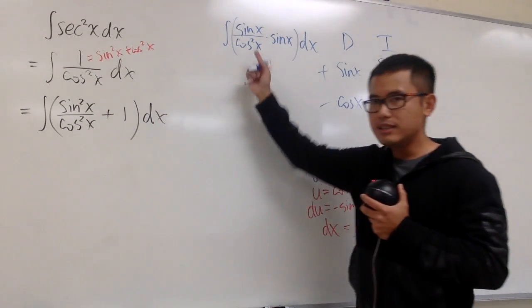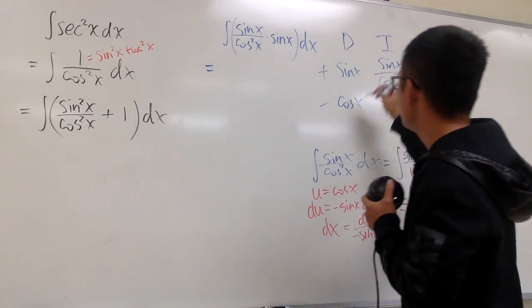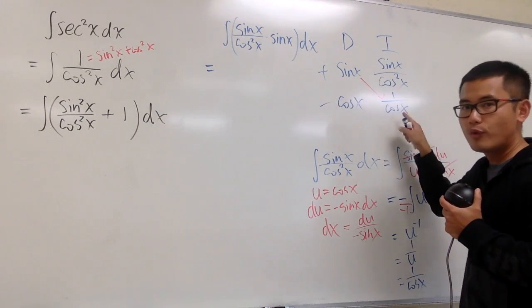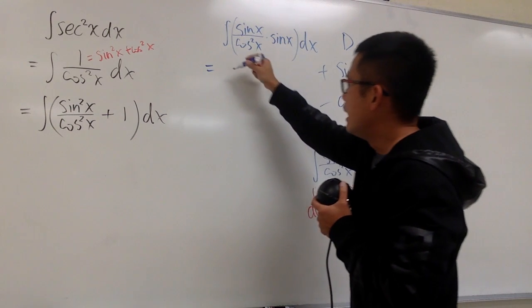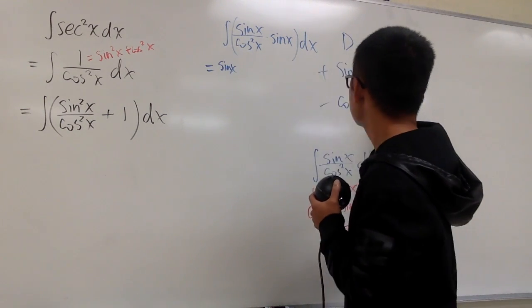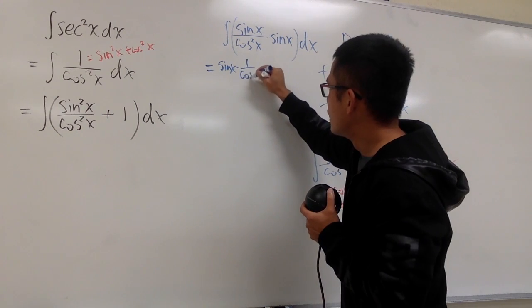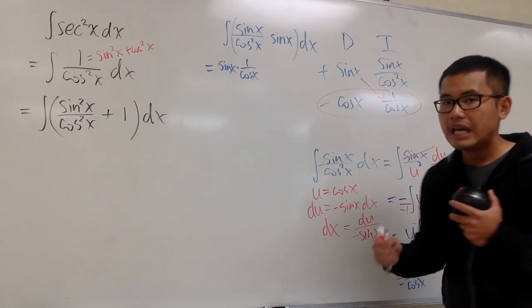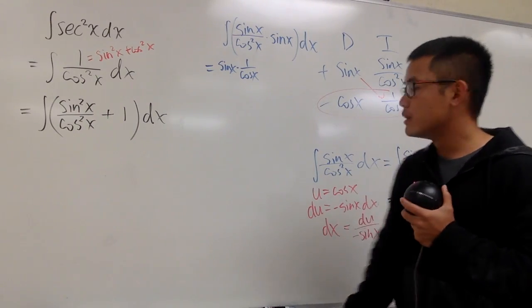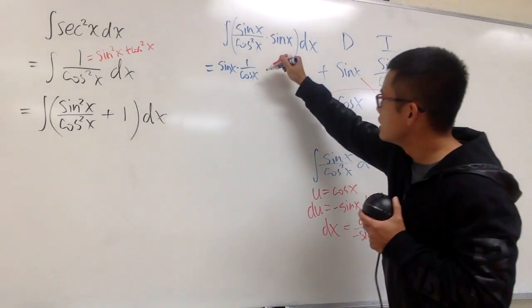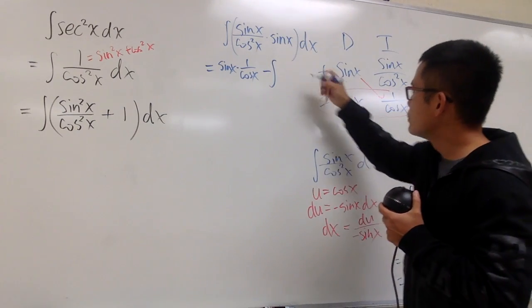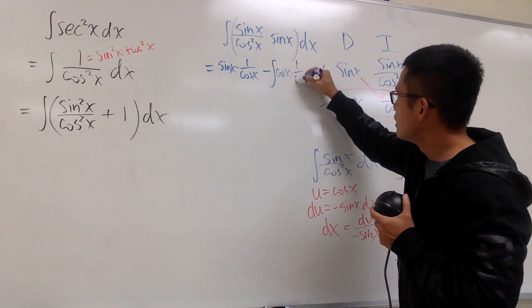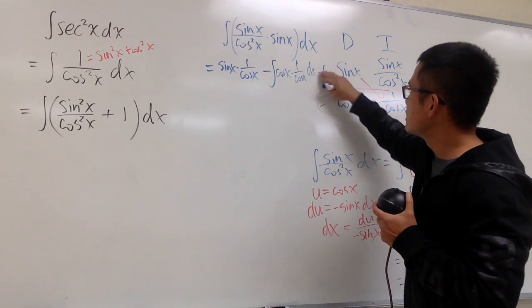From here to here, it's 1 over cosine x. I'm not going to put this down as secant x yet, because this is just my integration by parts part with the DI method. So for this, we know the answer is going to be this times that, positive sine x times 1 over cosine x. And remember, the product of each row is still an integral. So we have to subtract integral of this times that, which is cos x times 1 over cos x dx.